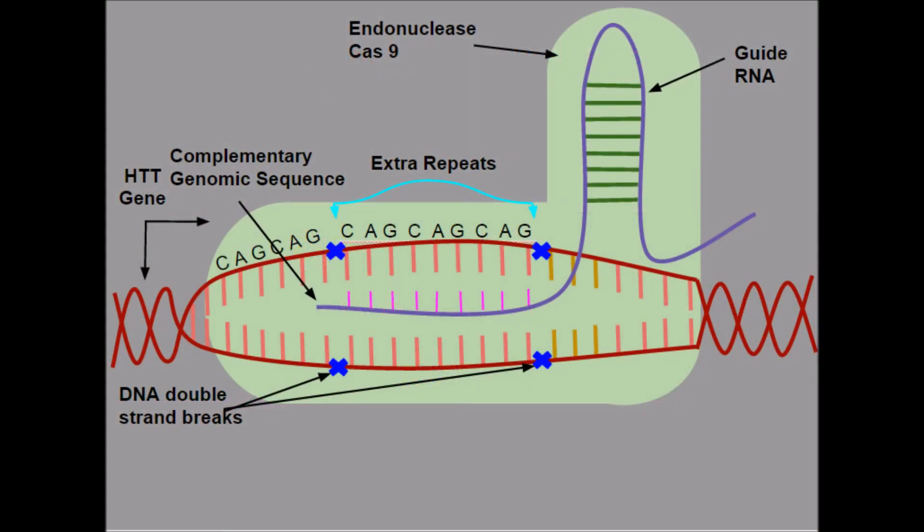Once inside the brain, the CRISPR-Cas9 system would take effect. The Cas9 endonuclease would be guided to the extra repeats in the DNA sequence and cleave out the excess repeats.